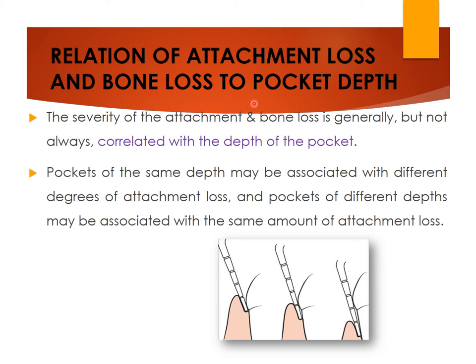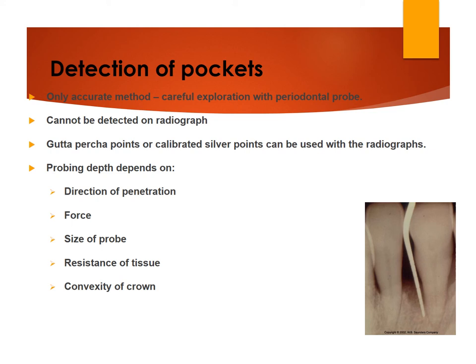Regarding the relation of attachment loss and bone loss to pocket depth: severity of attachment and bone loss is generally but not always correlated with pocket depth. Pockets of the same depth may be associated with different degrees of attachment loss, and pockets of different depths may be associated with the same amount of attachment loss. The only accurate method for detecting pockets is careful exploration with a periodontal probe; this cannot be detected on radiographs alone, though calibrated silver points can be used along with radiographs. Probing depth depends on direction of penetration, force applied, probe size, tissue resistance, and convexity of the crown.